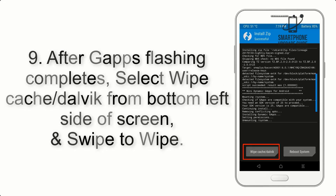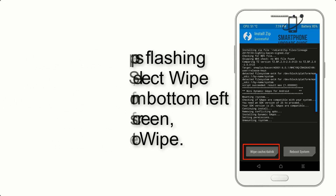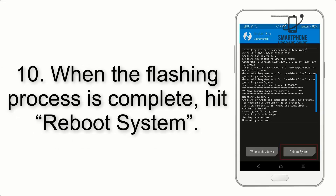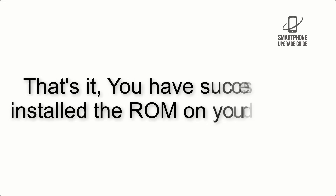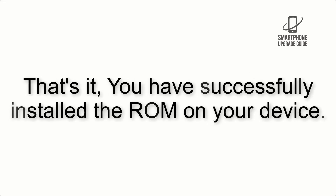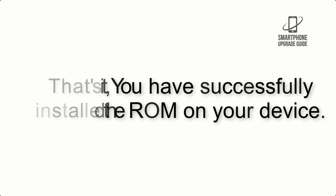Step 9: After GApps flashing completes, select Wipe Cache and Dalvik from the bottom left side of the screen and swipe to wipe. Step 10: When the flashing process is complete, hit Reboot System. That's it — you have successfully installed the ROM on your device.